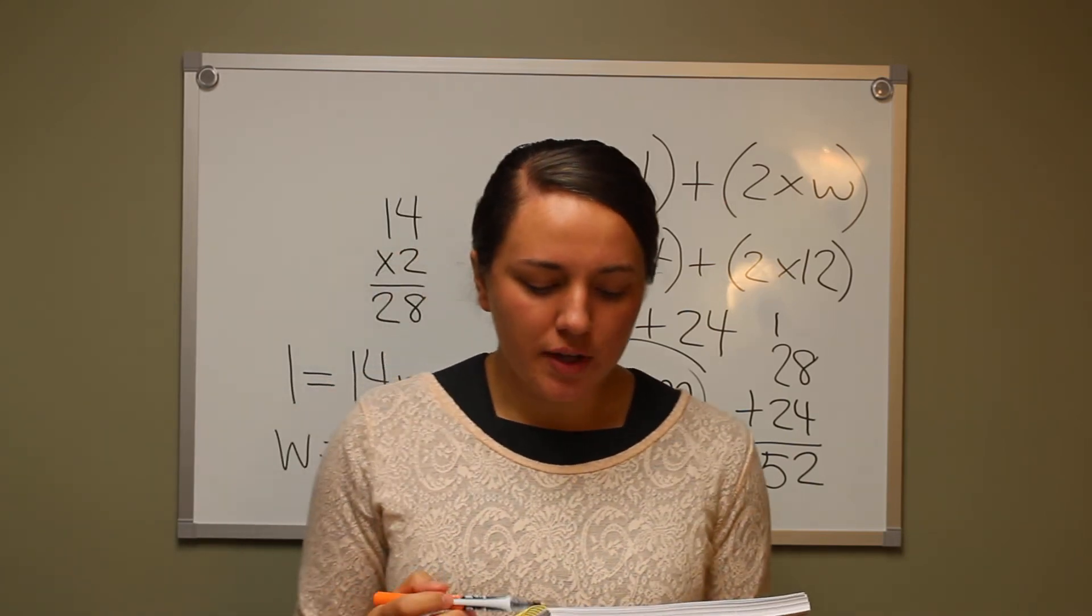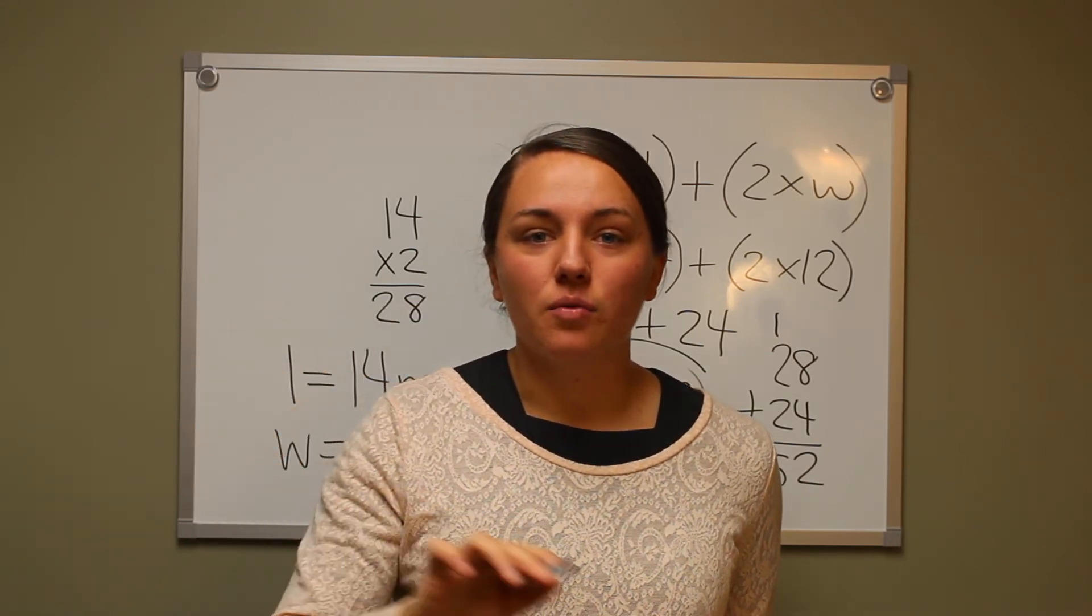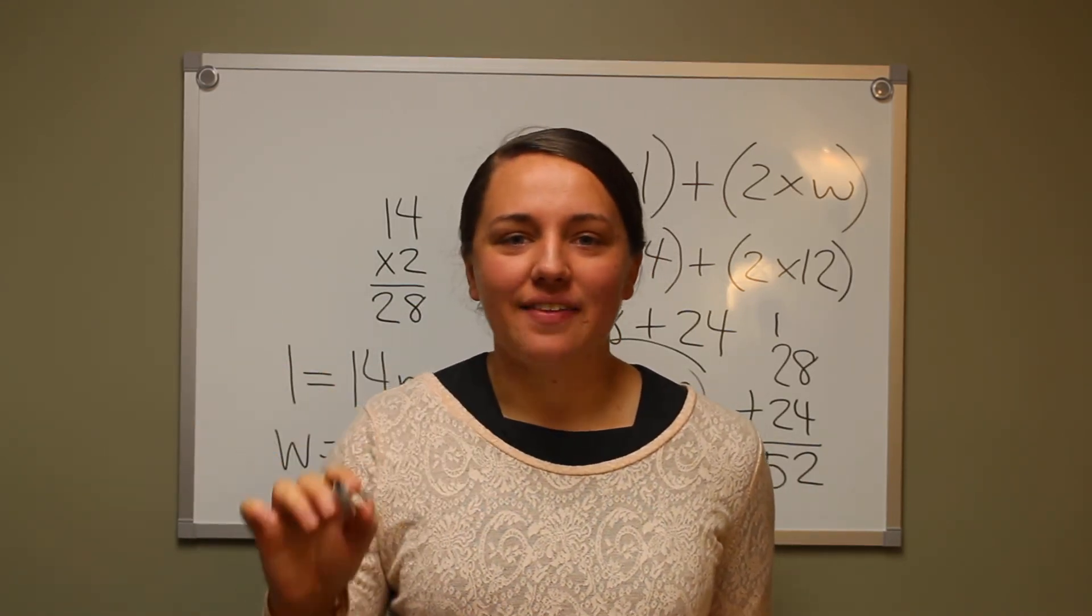For example, in number two they give you a triangle. So the perimeter there is just the length around the outside. So you just add them all together.